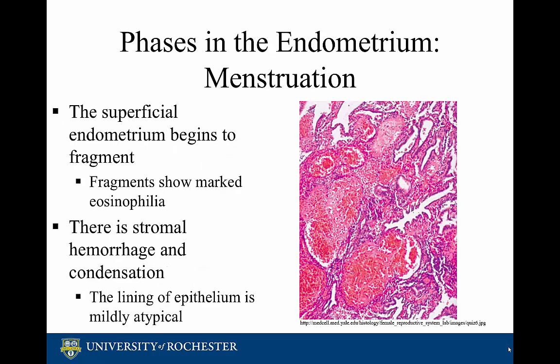During menstruation, the superficial endometrium begins to fragment and there is stromal hemorrhaging and condensation. The endometrial fragments show marked eosinophilia and the lining of the epithelium is mildly atypical.